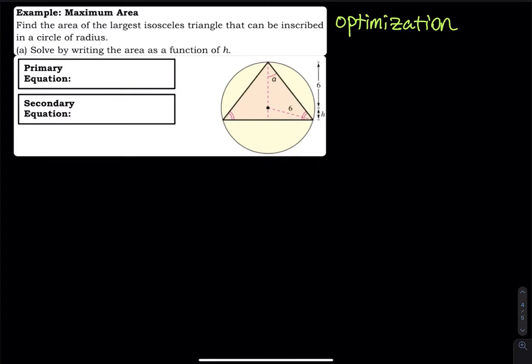Let's take a look at the picture. We have a circle and then we have an isosceles triangle. What is isosceles? Isosceles means these two sides have the same length — this length and this length are the same. And also this angle and that angle, they are the same. Can be inscribed in a circle of radius.